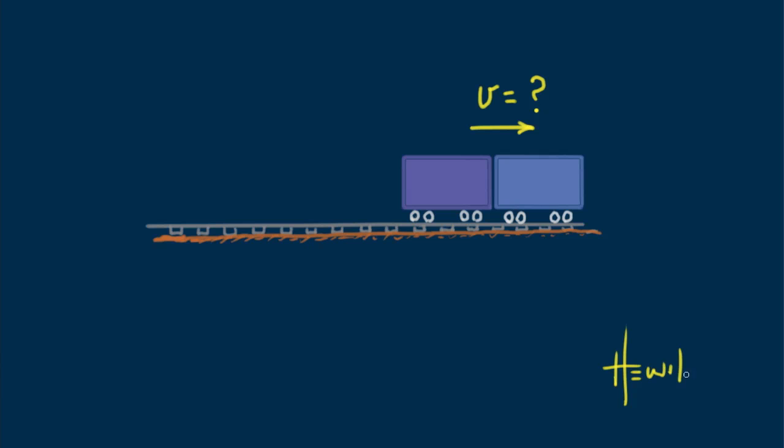I want to leave you with a question. Suppose a freight train car rolls along a track at 10 meters per second, and collides with an identical freight car of the same mass at rest. The two cars couple together and move as one along the track. How fast do the coupled cars move? Think about that. Until next time, good energy.